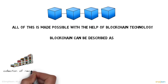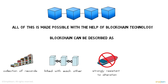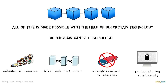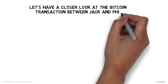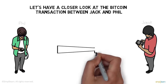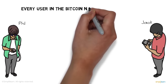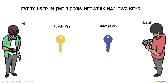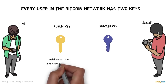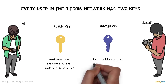Blockchain can be described as a collection of records linked together, strongly resistant to alteration, and protected using cryptography. Every user in the Bitcoin network has two keys: a public key — an address everyone in the network knows, like an email address — and a private key, a unique address only the user knows, like a password.